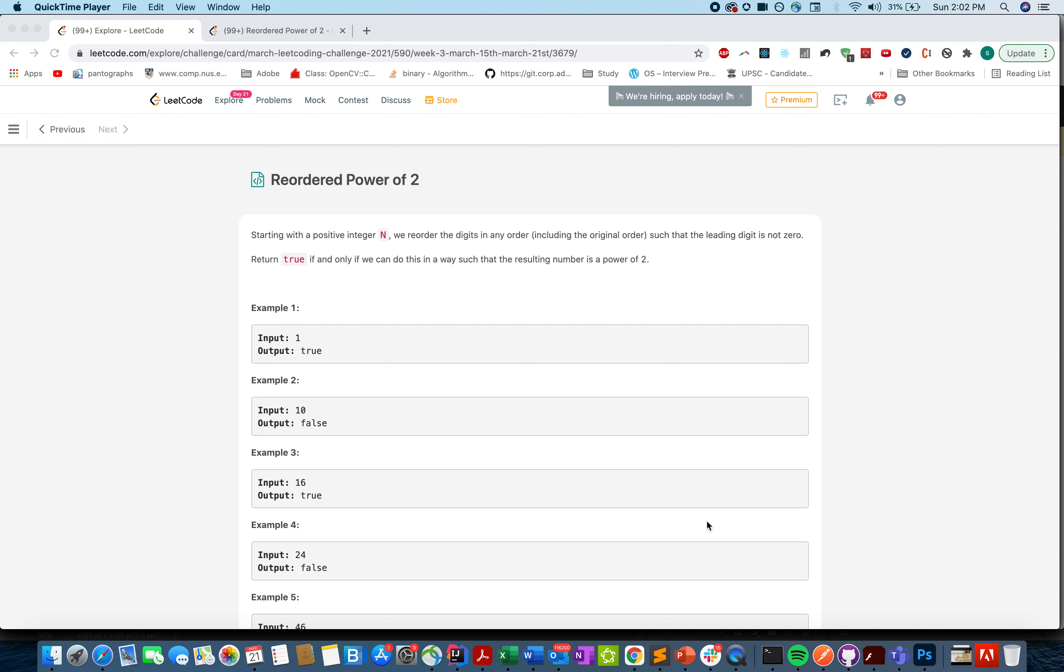Hello everyone, welcome to day 21 of March LeetCode Challenge. Today's question is Reordered Power of 2. You are given a positive integer n and we need to tell if we can reorder the digits in the given number n so the resultant number is a power of 2 or not. If that is the case we return true, if you can't generate a permutation of the given number as a power of 2 you have to return false.